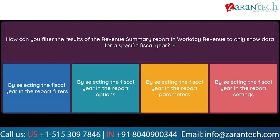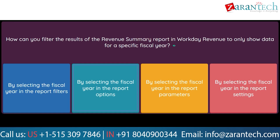Question: How can you filter the results of the revenue summary report in Workday Revenue to only show data for a specific fiscal year? Option 1: by selecting the fiscal year in the report filters. Option 2: by selecting the fiscal year in the report options. Option 3: by selecting the fiscal year in the report parameters. Option 4: by selecting the fiscal year in the report settings.